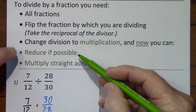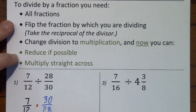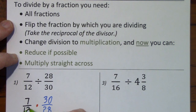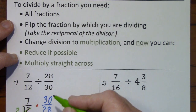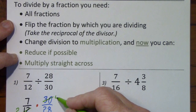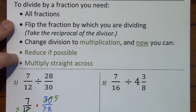Now we can reduce if possible. The greatest common factor of 12 and 30 is six, so divide by six leaves us with two. Divide by six. Divide by seven.